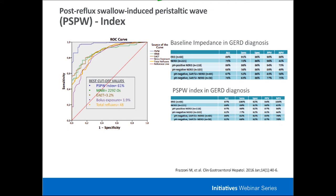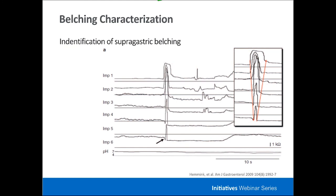Supragastric belching is associated with air infusion or swallowing followed by an immediate belch, and often manifests as reflux. While belching is a predominant mechanism in GERD, supragastric belching is a behavioral disorder better treated with behavioral therapies rather than acid suppression. On pH impedance output, you can see air coming down with air infusion and then directly expelled back out without leaving the esophagus.